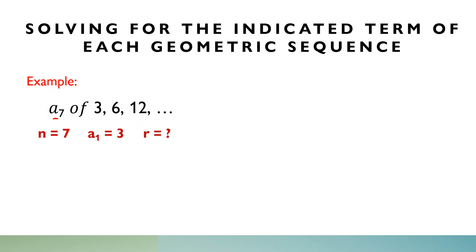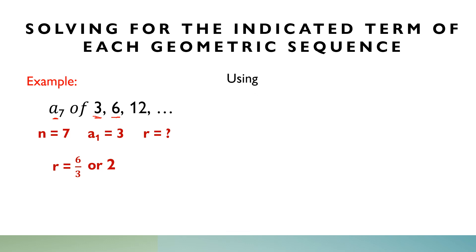So, how do we get r? To get r, we divide 6 by 3. So, 6 divided by 3 is equal to 2. Now, we will be using the geometric sequence formula: a sub n is equal to a sub 1 times r to the power of n minus 1.